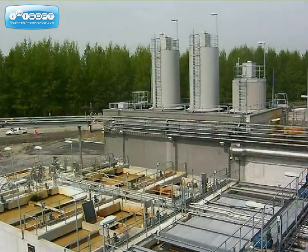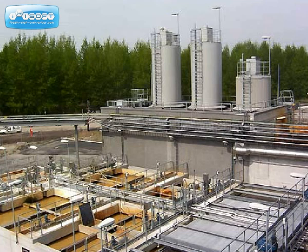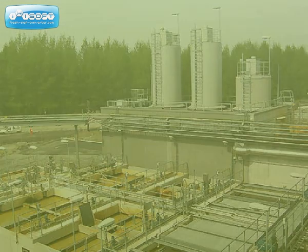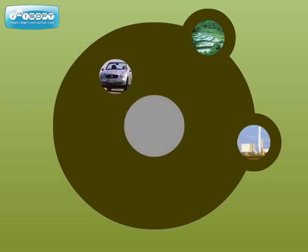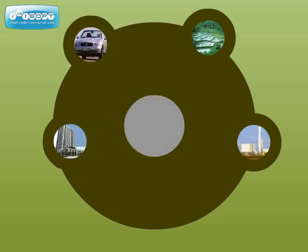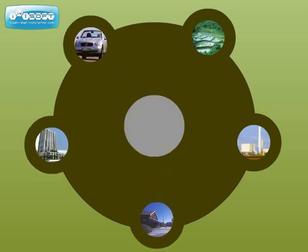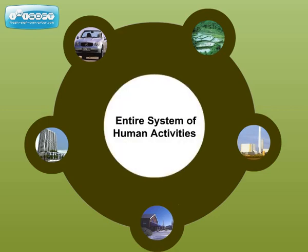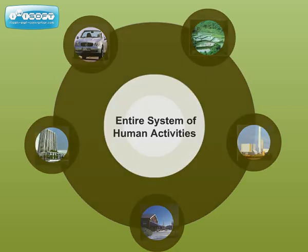Significantly, industrial ecology operates in conjunction with other traditional strategies such as pollution control, waste minimization and cleaner production. This planning process lays stress on a systemic approach. This route does not consider individual elements of a system in isolation, but views the entire system of human activities as a whole.